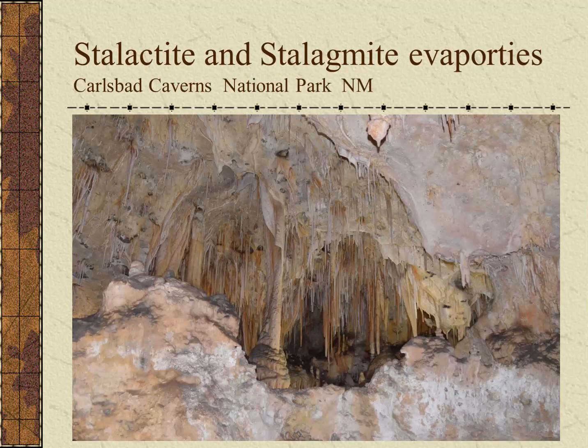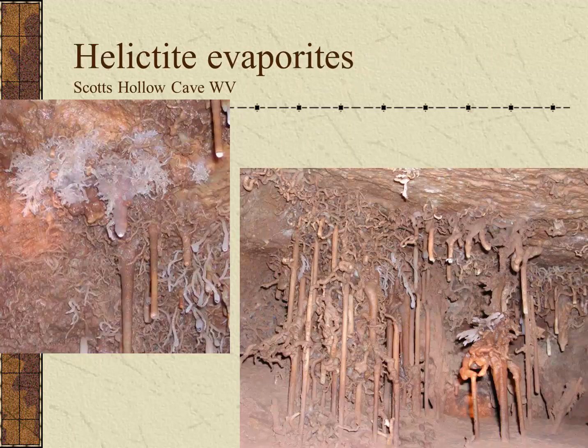Stalactites, stalagmites, and other cave speleothems are also evaporites. Mineral-rich water dripping from the ceiling may form long stalactites, or build up on the floor as stalagmites. As the water evaporates, the minerals are deposited and left behind. Helictites are a particularly unique type of speleothem — these helictites are found in Scott's Hollow Cave in West Virginia. Rather than growing vertically down from the ceiling or up from the floor, they can grow horizontally or at unique and strange angles.